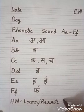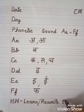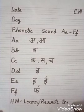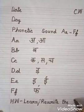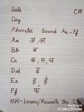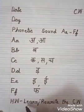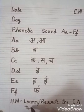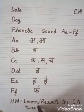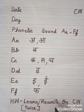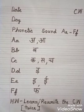Then leave some space. Then write down T, H, E — the. Then again leave some space. Then write down C dot W — it means classwork. And here write down twice: T, W, I, C, E — twice. Homework is: learn, rewrite the classwork twice.